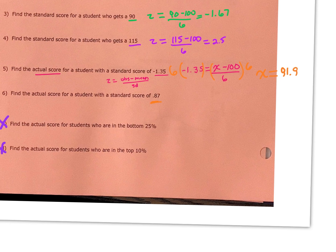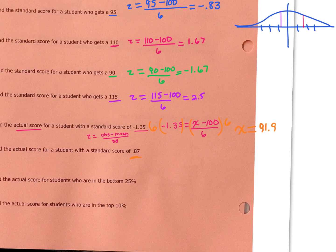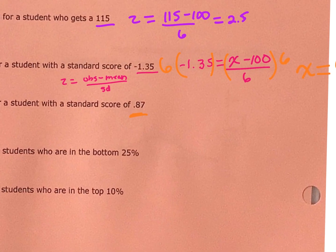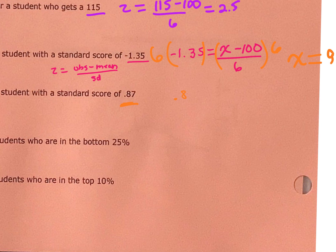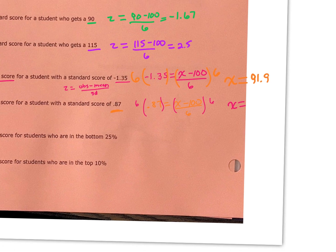For a standard score of 0.87, we know that's going to be a value around 106, because one standard deviation above the mean is at 106. So if z equals 0.87 equals some unknown observation minus 100, all over 6, we multiply by 6 and add 100. In this case we find the actual score would be 105.22 — as expected, pretty close to 106.